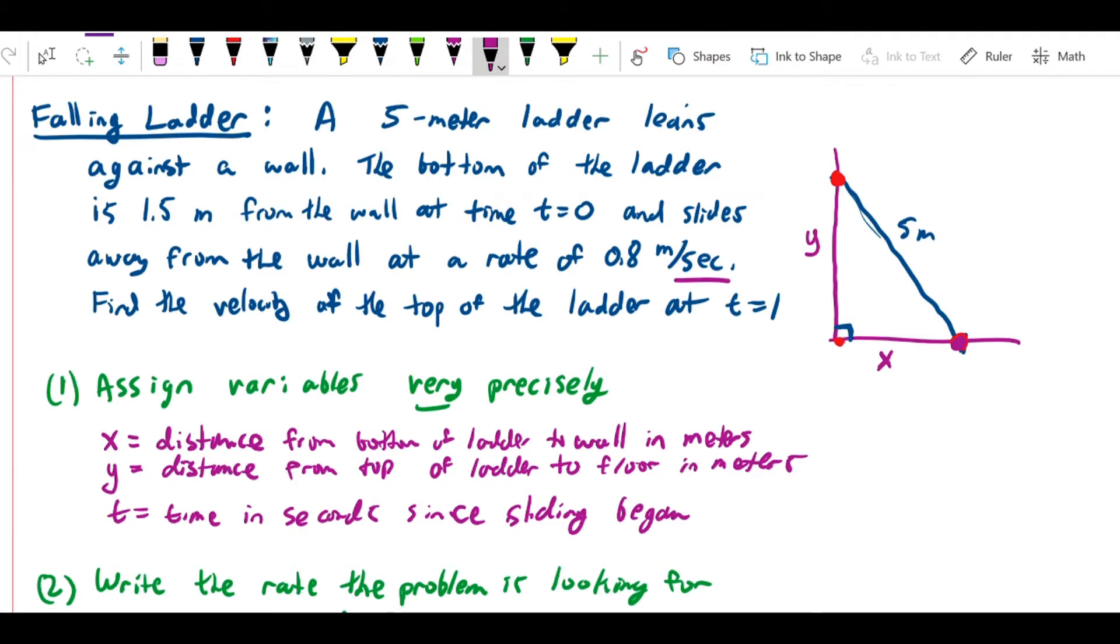The next thing to ask is what rate is the problem looking for? We're looking for the velocity of the top of the ladder. The top of the ladder is sliding down the wall, which means what we're looking for is how fast this quantity y is changing.